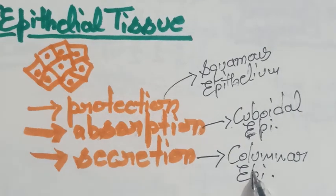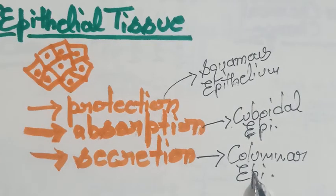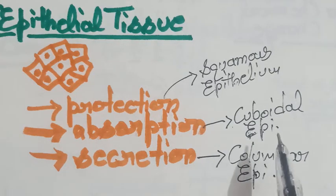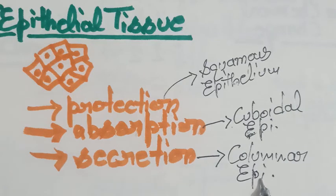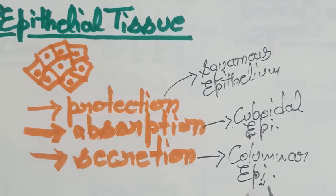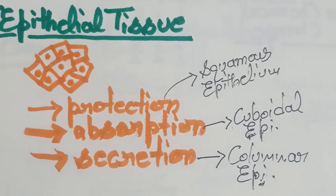Then last one is columnar epithelium. They appear column-like in its structure. They occur in the lining of stomach, intestine, pharynx and trachea. And the main function of these tissues is secretion of various substances as well as they help in the absorption of digested food in the intestine. I hope everything is very clear up to here.